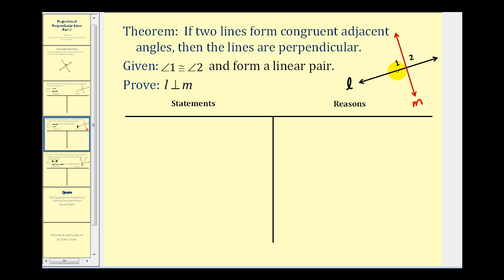So let's think about how we can devise this proof. We know if angle one and angle two are a linear pair, their measures must have a sum of one hundred eighty degrees. So if we can show their sum is one hundred eighty degrees and they're also congruent — which means they have the same measure — they both must measure ninety degrees, which means they're both right angles and therefore these two lines would be perpendicular. This is going to take several steps, but let's construct this proof.